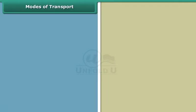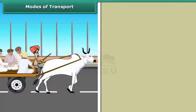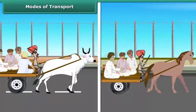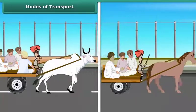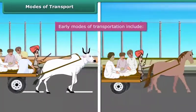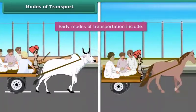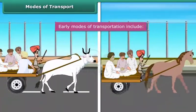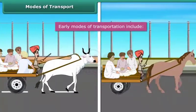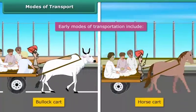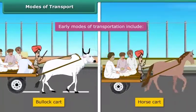Modes of transport. Have you wondered how people travelled in the earlier days? In the early days, people have always used animals to travel from one place to another. For example, bullock cart, horse cart, etc.